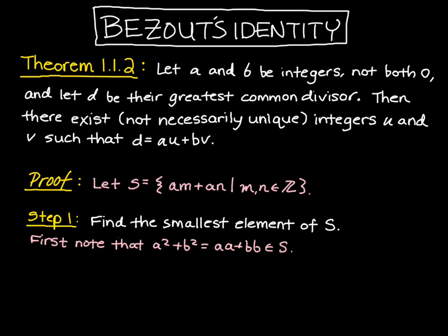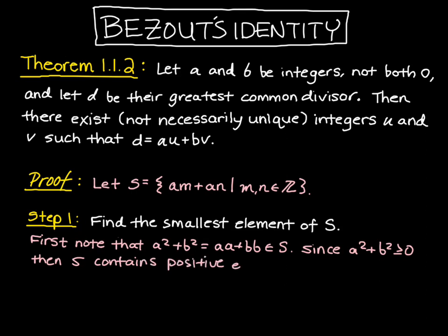Now what do we know about a squared plus b squared? We know that it is always going to be positive. And since it's an element of our set, we know that S contains positive elements. And so this means that by the Well-Ordering Axiom, the set S has a least positive element.